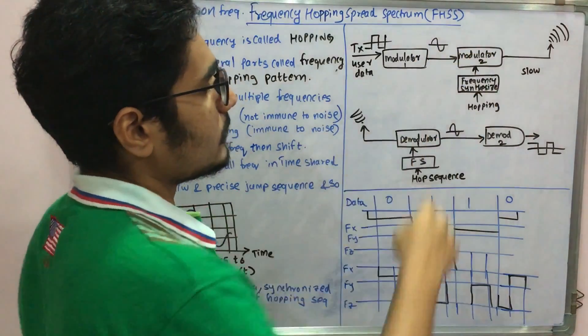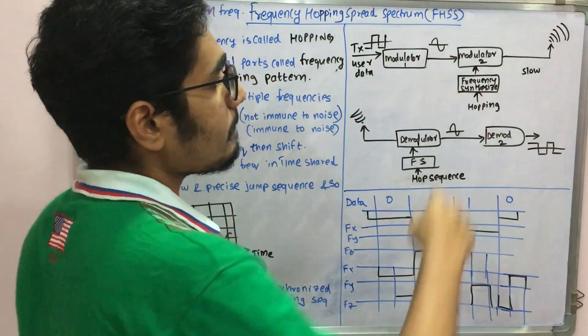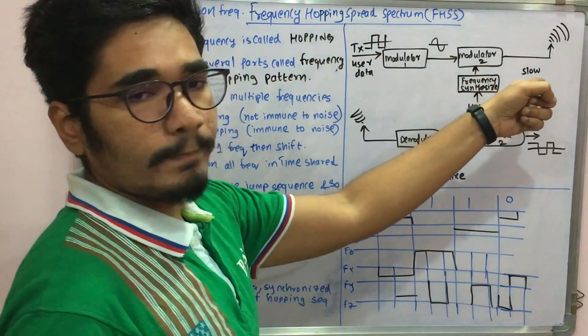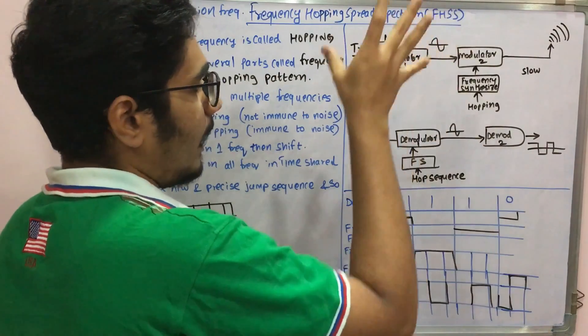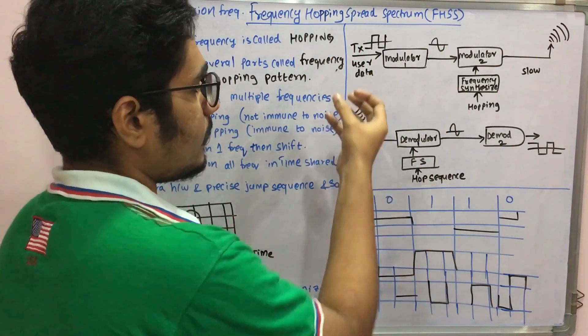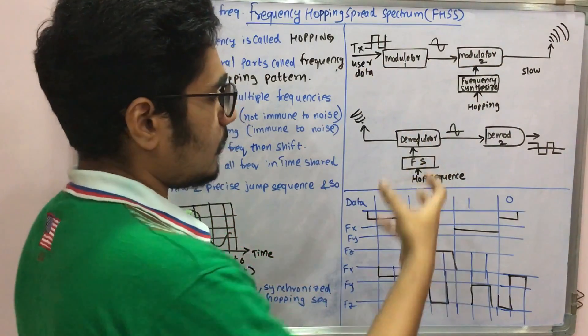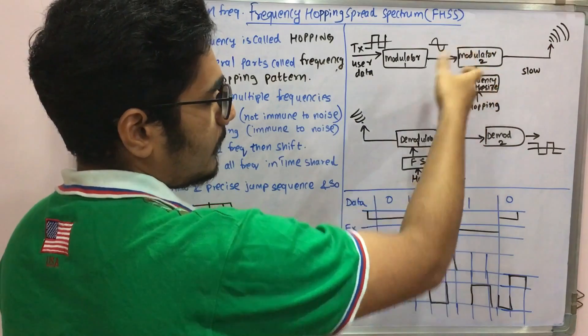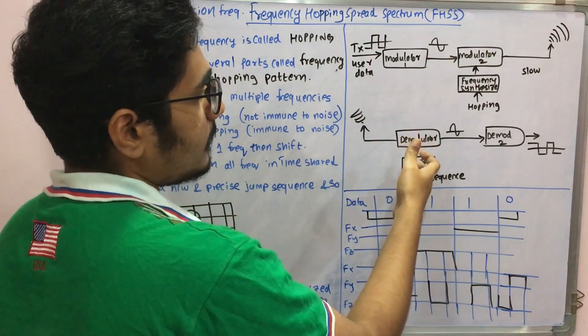The modulator 2 puts the hopping sequence into the frequency synthesizer, a hop pattern is obtained, and it's transmitted. At the demodulator side, the sent data is taken here and demodulator 1 is used. A hop sequence replica is kept here and applied to